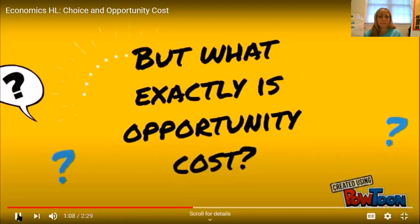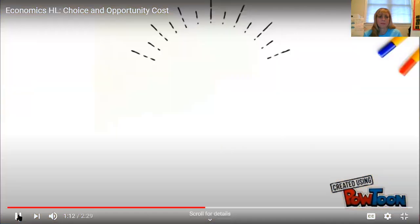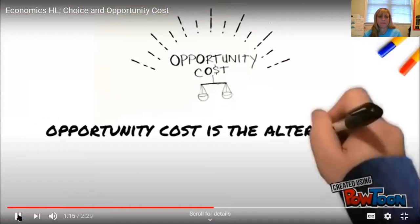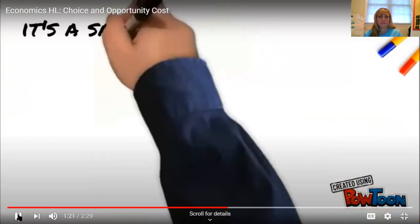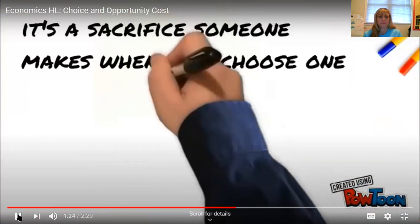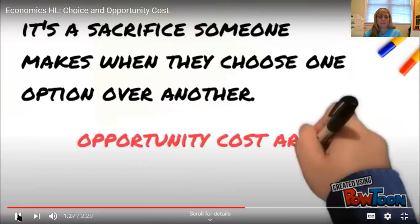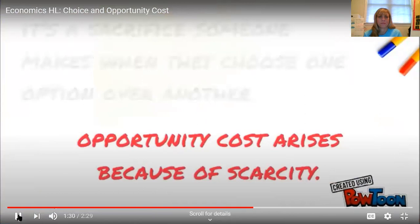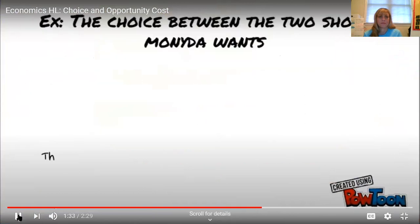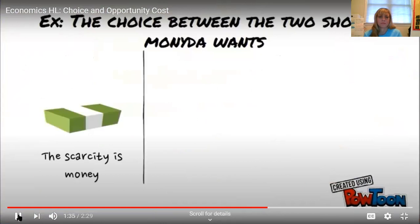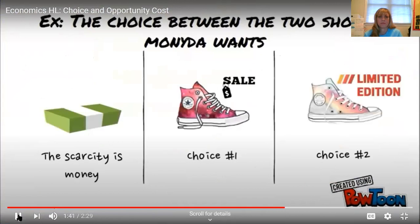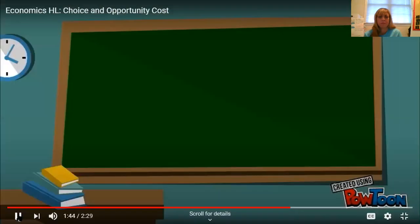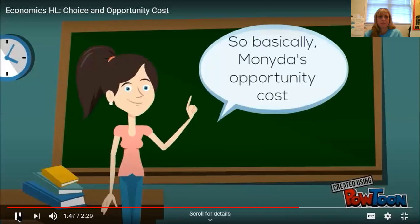But what exactly is opportunity cost? Opportunity cost is the alternative that must be forgone when making a choice. It's a sacrifice someone makes when they choose one option over another. Opportunity cost arises because of scarcity. For example, the choice between the two shoes Monita wants — the scarcity in this case is money. Choice number one is a shoe that's on sale, and choice number two is a shoe that's limited edition. So basically, Monita's opportunity cost is the shoe she didn't purchase.